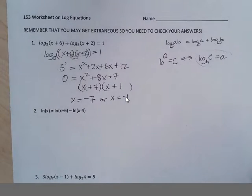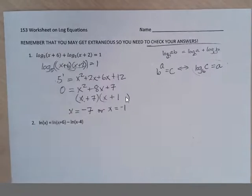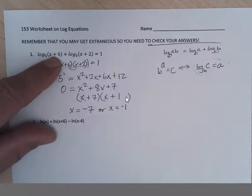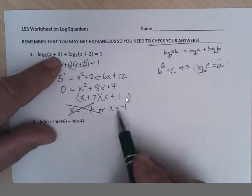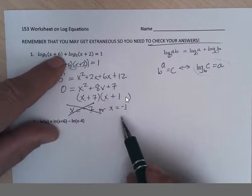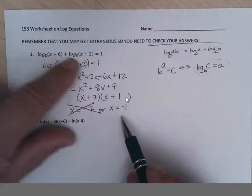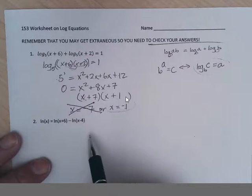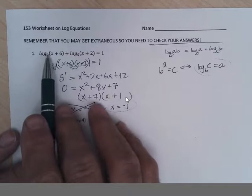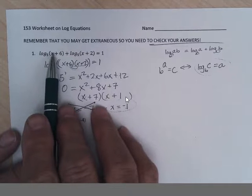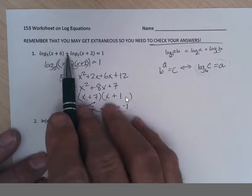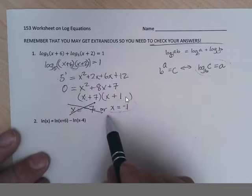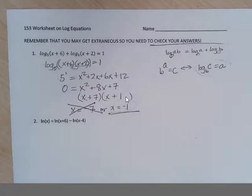We always have to check our answers. Negative 7 plus 6 is a negative and you can't do logs of negatives. Can't use this answer. Negative 1 plus 6 is 5, that's positive. Negative 1 plus 2 is positive, so negative 1 works. You could type in log base 5 of minus 1 plus 6 plus log base 5 of minus 1 plus 2 and if you get 1, you've got the right answer.